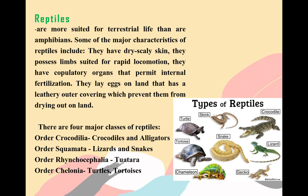Reptiles are more suited for terrestrial life than amphibians. Some major characteristics include: they have dry, scaly skin; they possess limbs suited for rapid locomotion; they have copulatory organs that permit internal fertilization; and they lay eggs on land with a leathery outer covering which prevents them from drying out. These are the four major classes of reptiles: Order Crocodilia — the crocodiles and alligators; Order Squamata — the lizards and snakes; Order Rhynchocephalia — the tuatara; and Order Chelonia — turtles and tortoises.